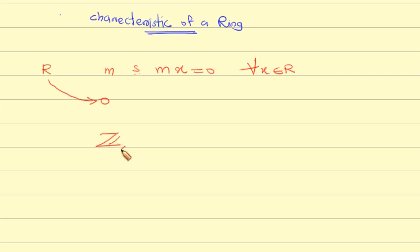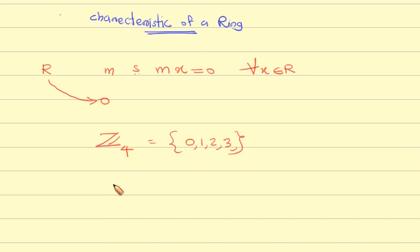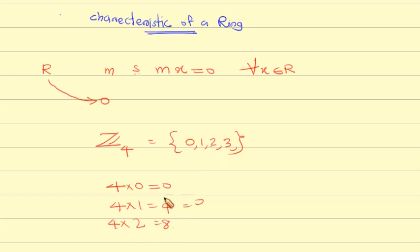Example: Z4 is the ring {0, 1, 2, 3}. In Z4, 4 equals 0. So 4 times any element equals 0. For instance, 4 times 3 equals 12, and 12 mod 4 equals 0. Therefore 4 times 3 is equal to 0 in Z4.